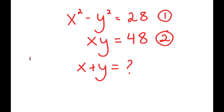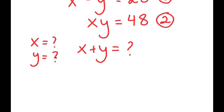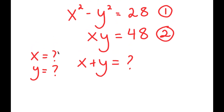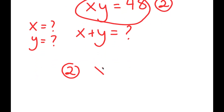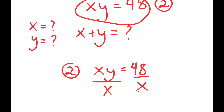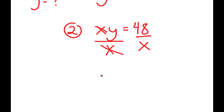Finding this is fairly simple once we find the values of x and y. To start, I'm going to use my second equation: x times y equals 48. I'm going to solve for one variable in relation to the other. I'll solve for y by isolating it — dividing both sides by x — so I get y is equal to 48 over x.